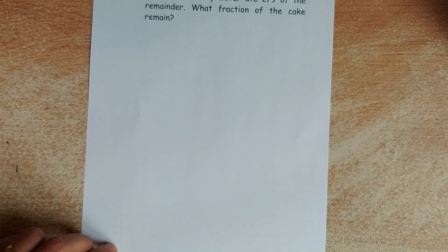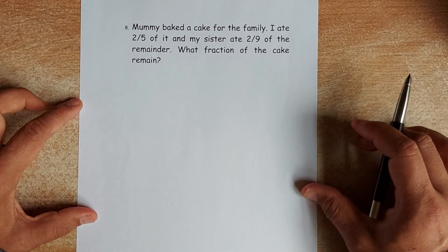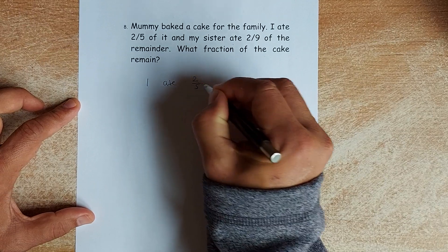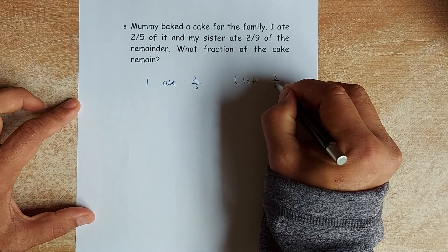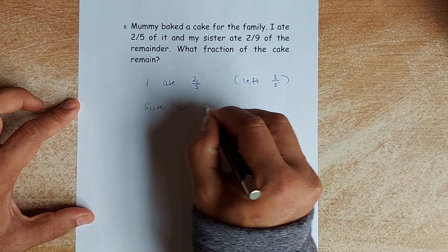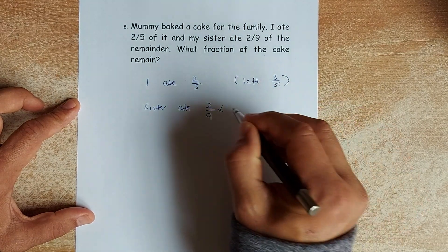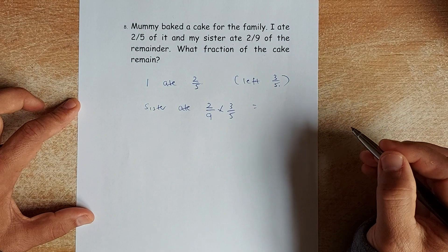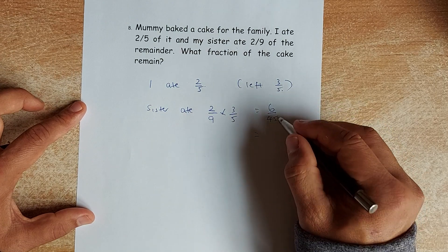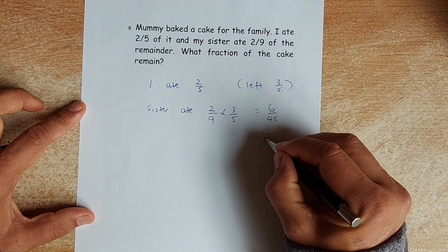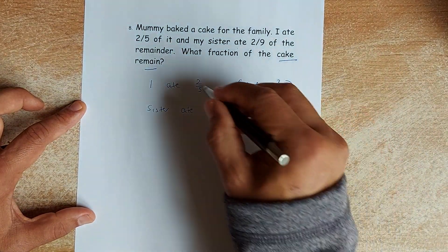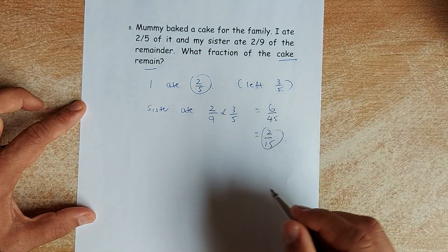The last question. This is slightly different. Mommy baked a cake for the family. I ate two fifths. So what's left is going to be three fifths. My sister ate two ninths of the remainder. So my sister ate two ninths of the remainder. The remainder is three fifths. If you multiply them together, it's going to be 6 over 45. Or you simplify them. It's going to be divided by 3. The numerator and denominator is going to be 2 over 15.